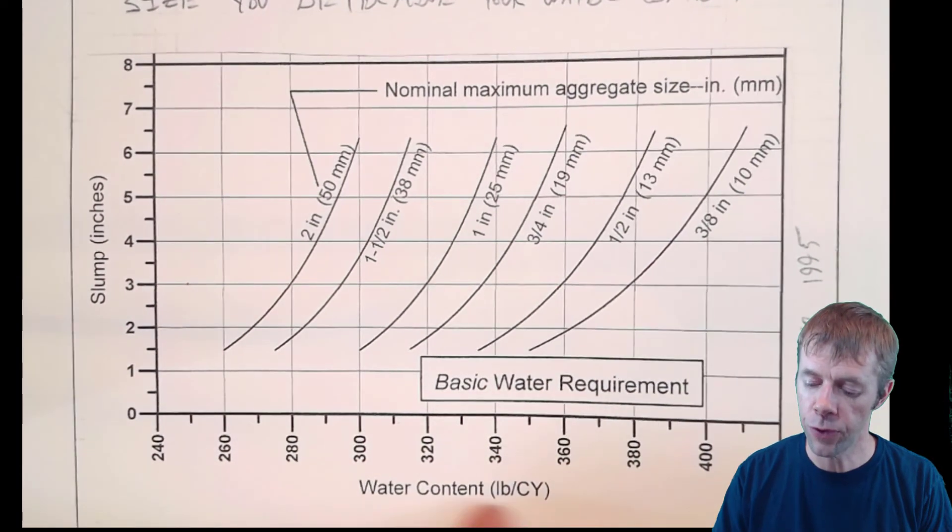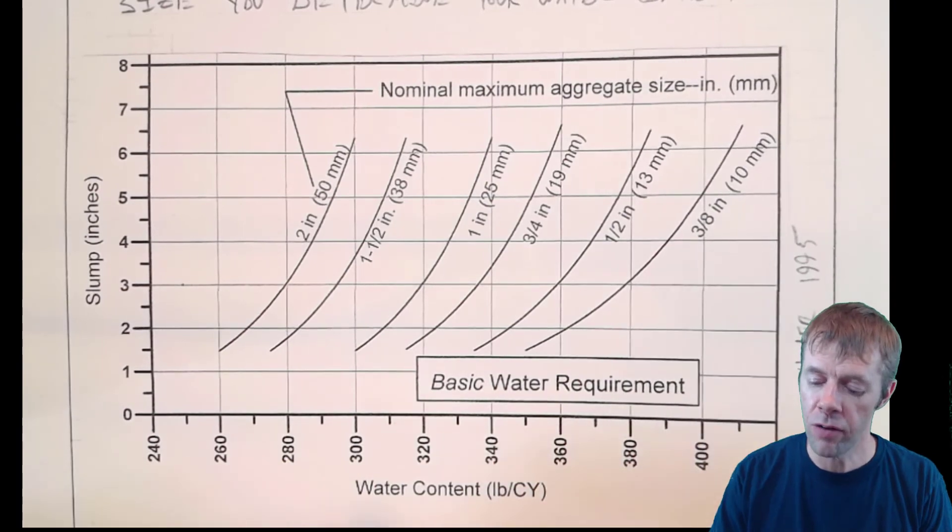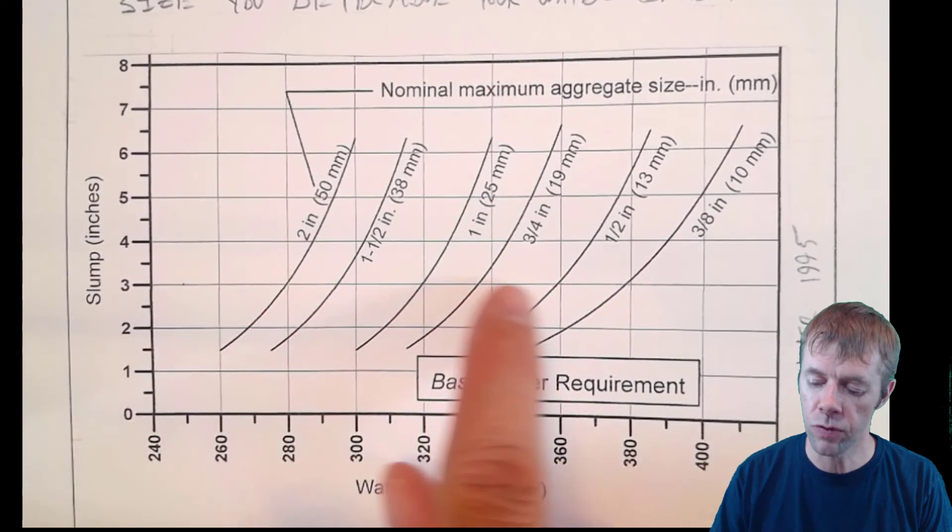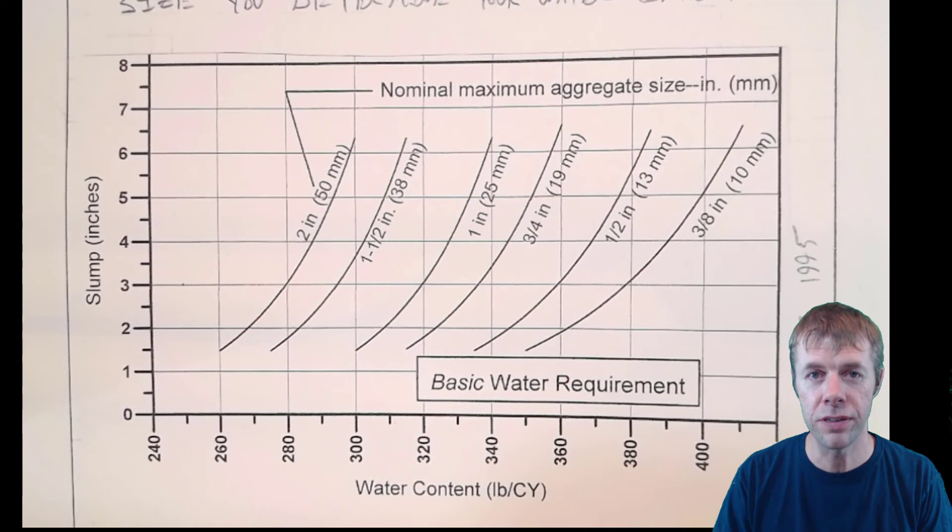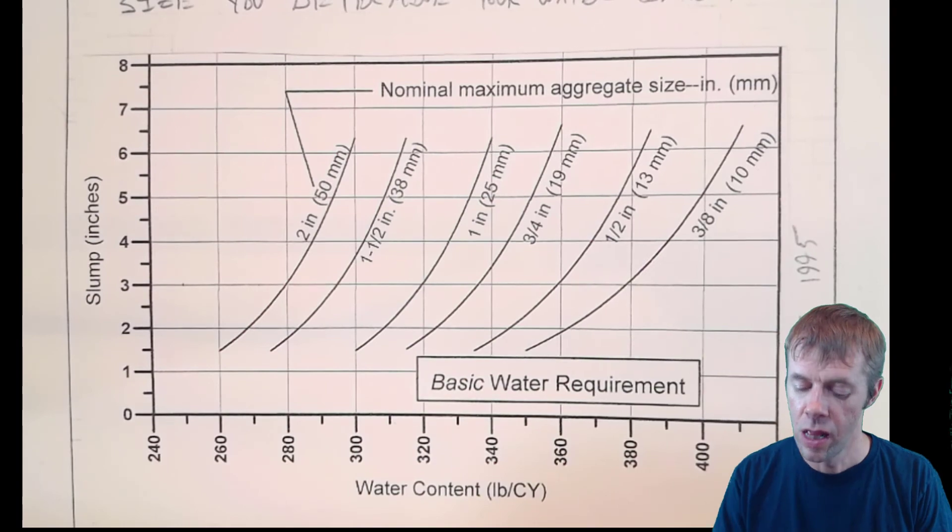We can see we've got the slump over here. We've got the water content over here. And this is care of Dr. Hover. And we have the nominal maximum aggregate size over here. This is a modification of the tables in ACI-211 to be graphical. Ha! I love graphical stuff.